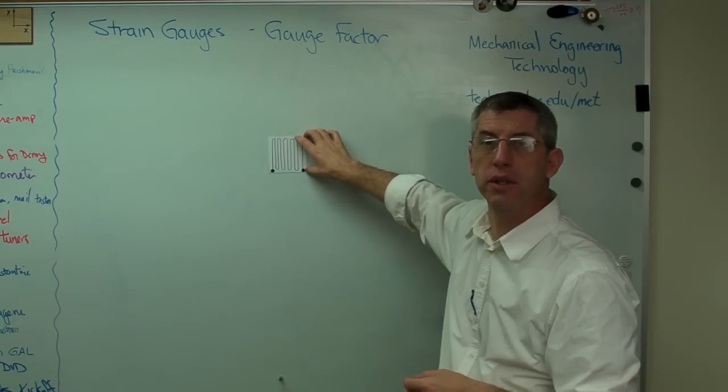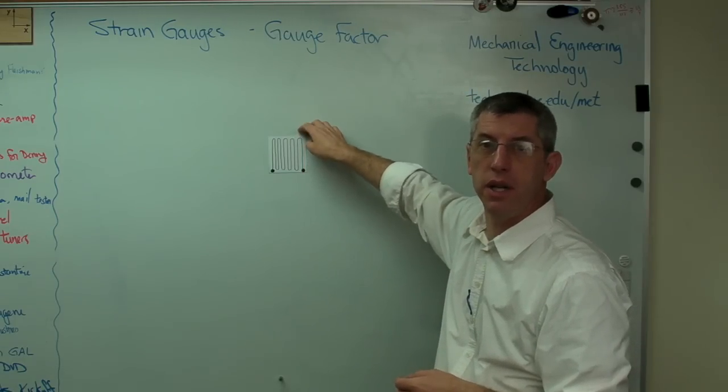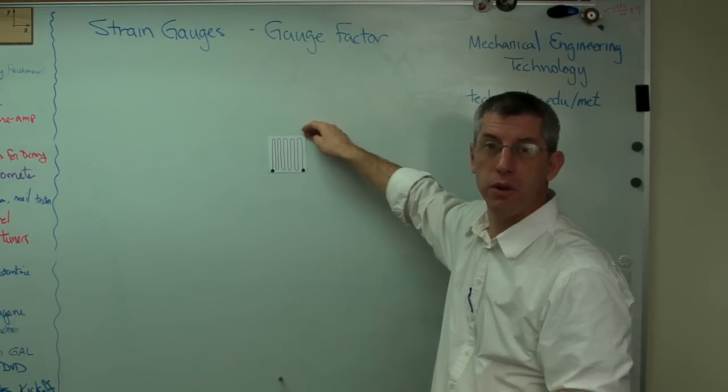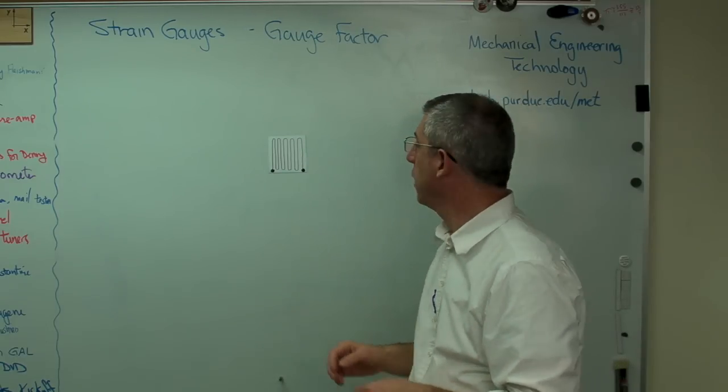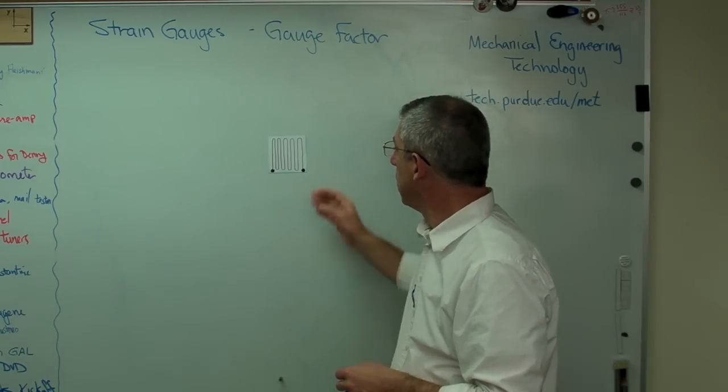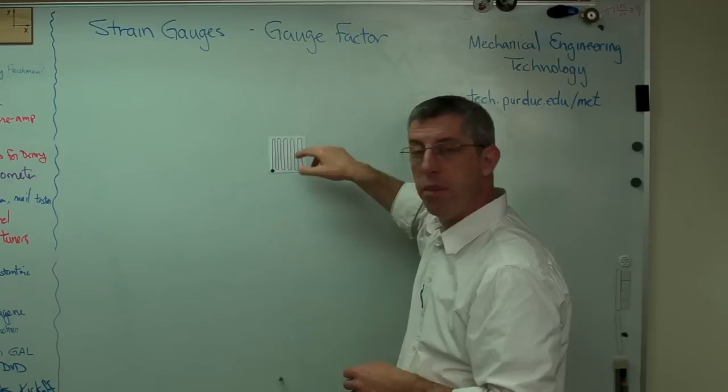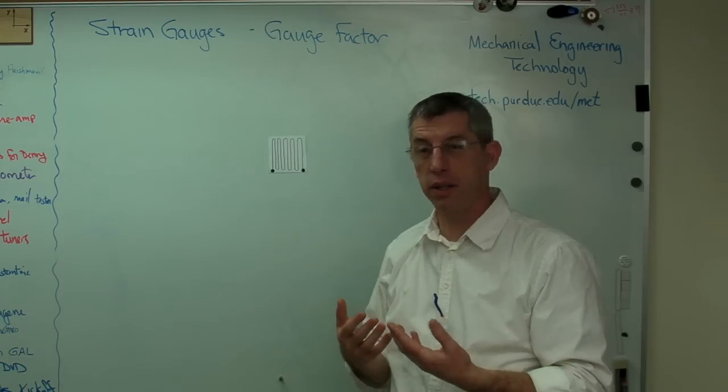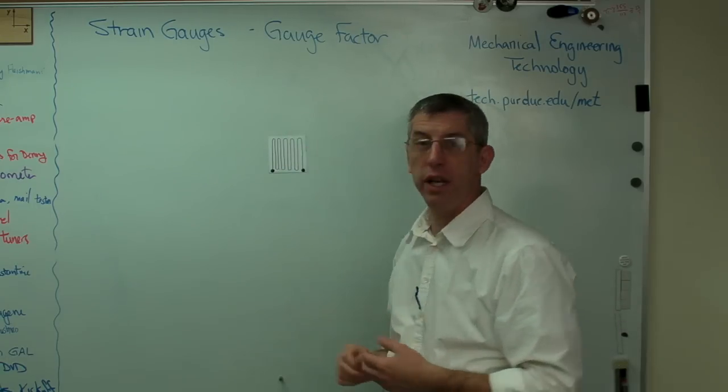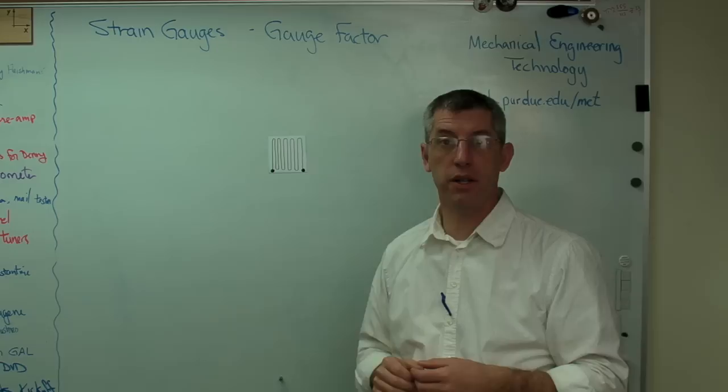Strain gauges come in basically two resistances. The only two I've ever seen are 120 ohms and 350 ohms. Now why those are the standard? I don't know, but those are the standard as far as I know. So by wrapping the wire back and forth, we get a long wire in a small space. So we get increased sensitivity without big changes in the dimension of the gauge itself.